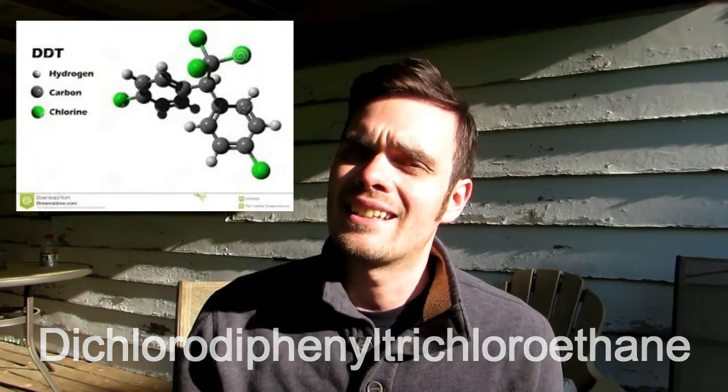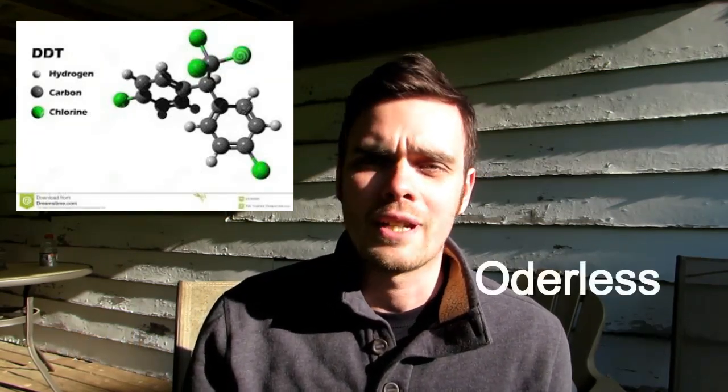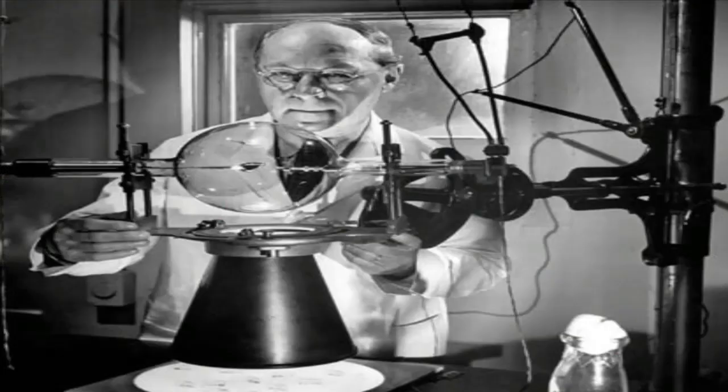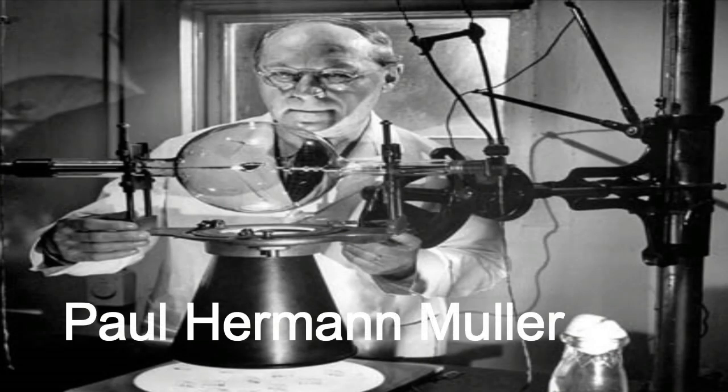Dichlorodiphenyl trichloroethane is a colorless, tasteless, and nearly odorless organochloride known for its insecticidal properties. DDT's insecticidal tendencies were discovered by Swiss chemist Paul Hermann Müller in 1939. Later, he was awarded the Nobel Prize in Physiology or Medicine for his discovery of the high efficiency of DDT as a contact poison against several arthropods. DDT seems to literally drive bugs crazy — it opens sodium ion channels in insect neurons, causing them to fire spontaneously, which leads to spasms and eventual death.